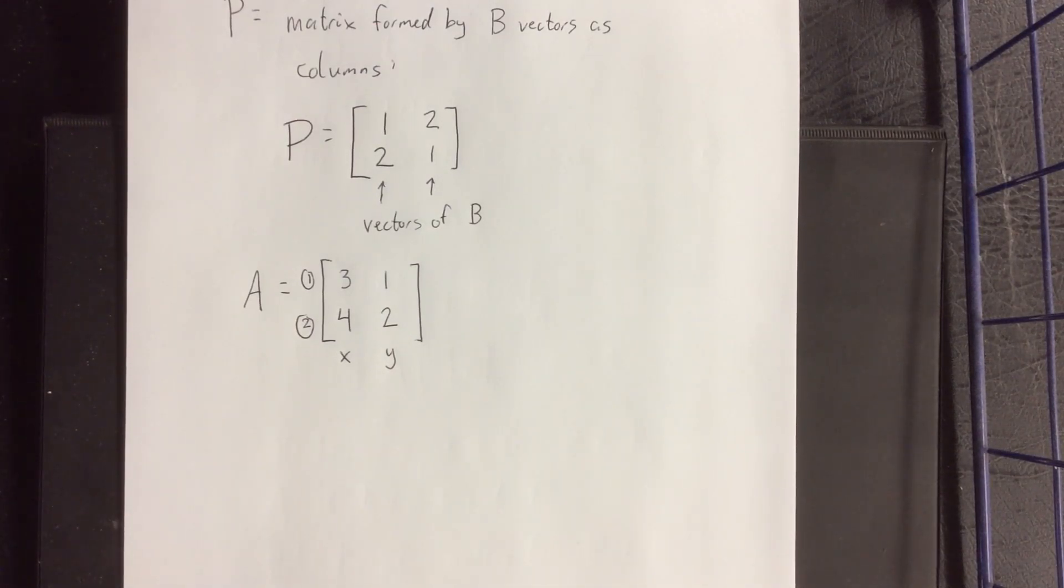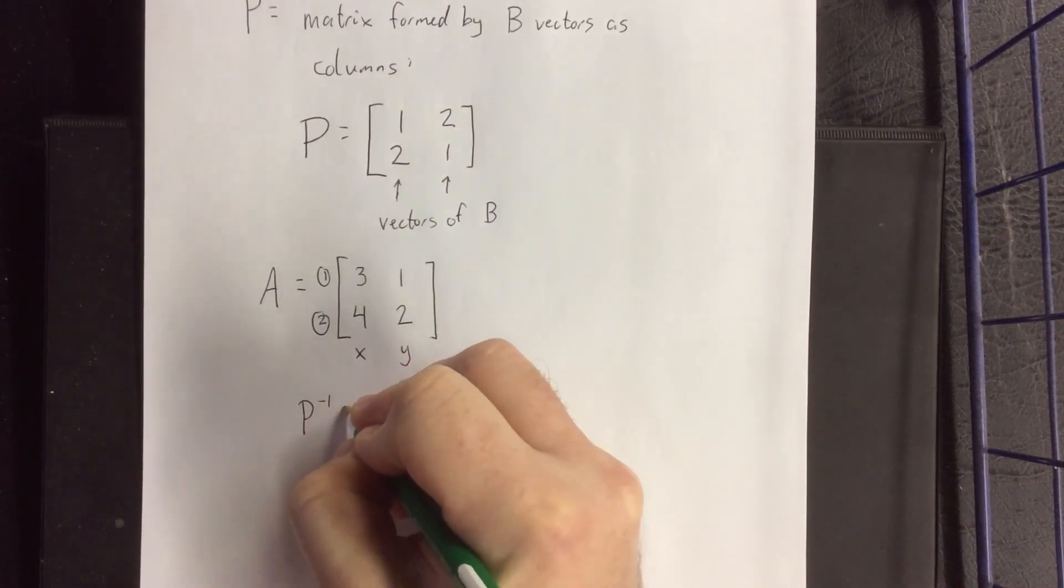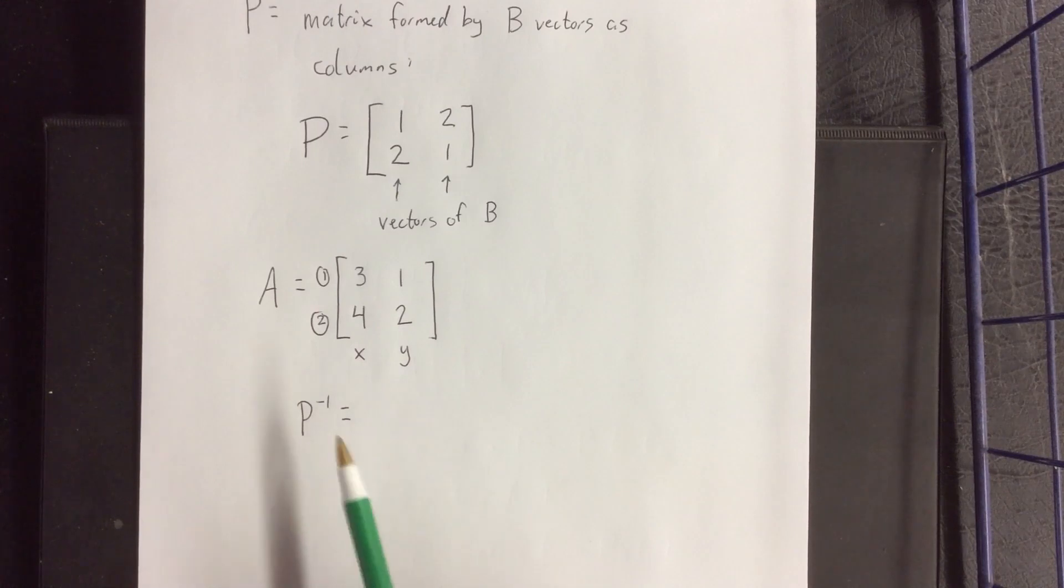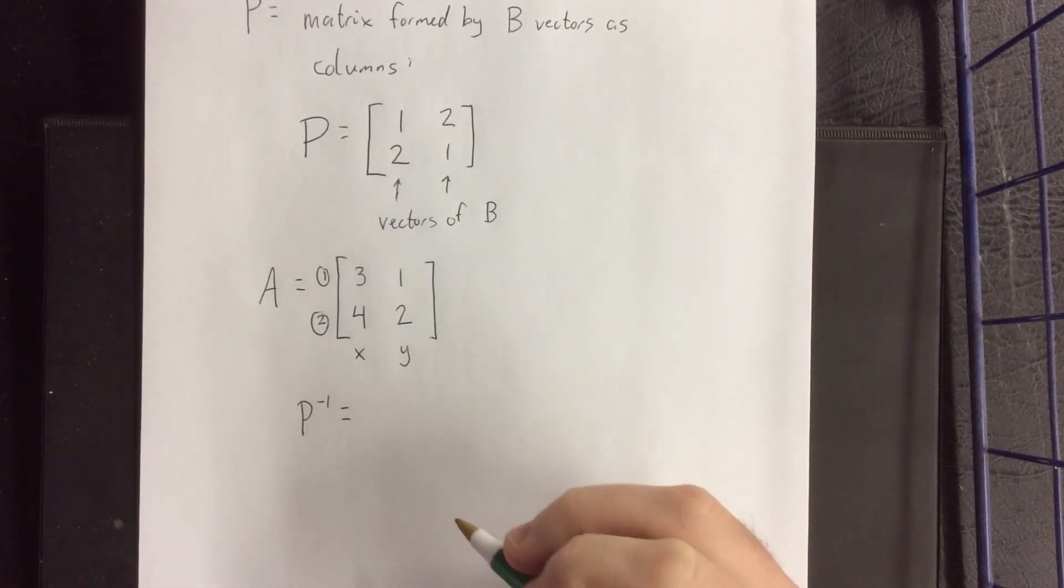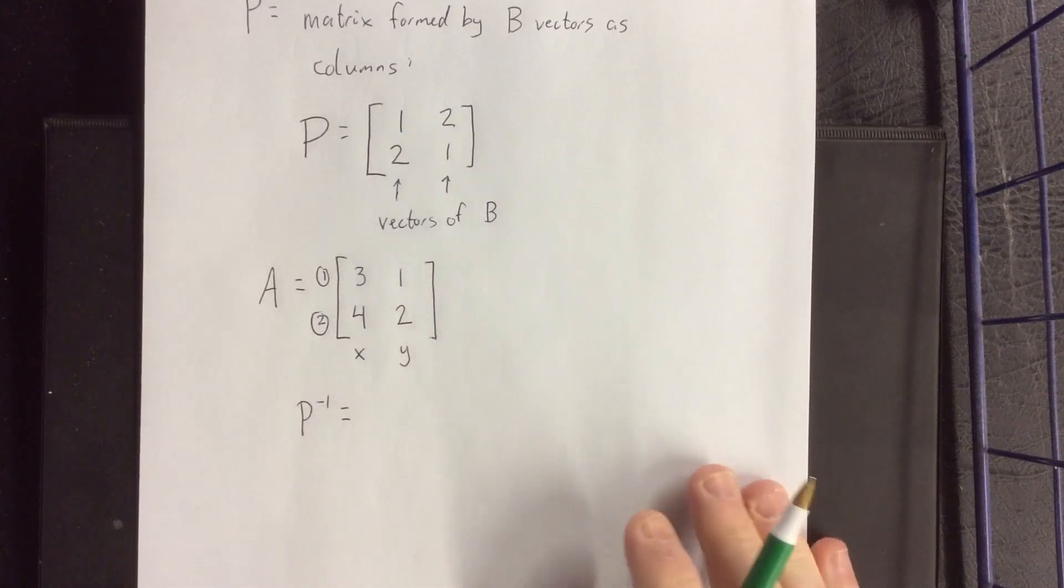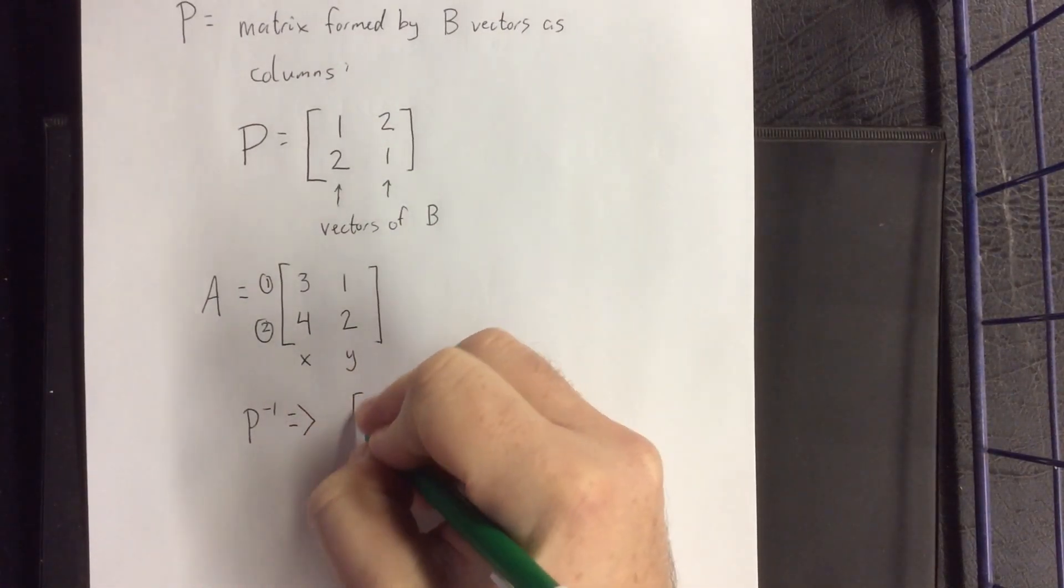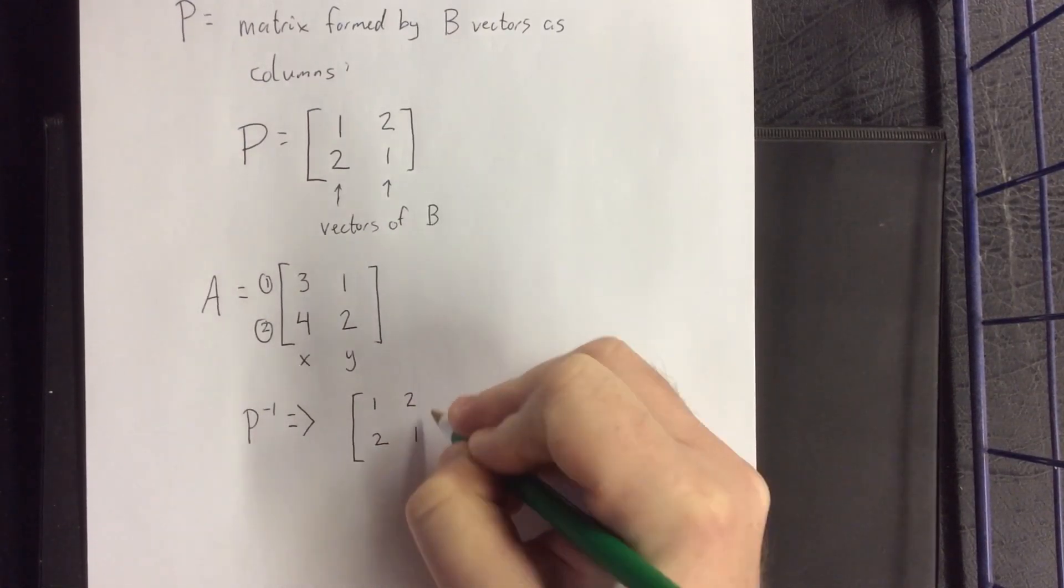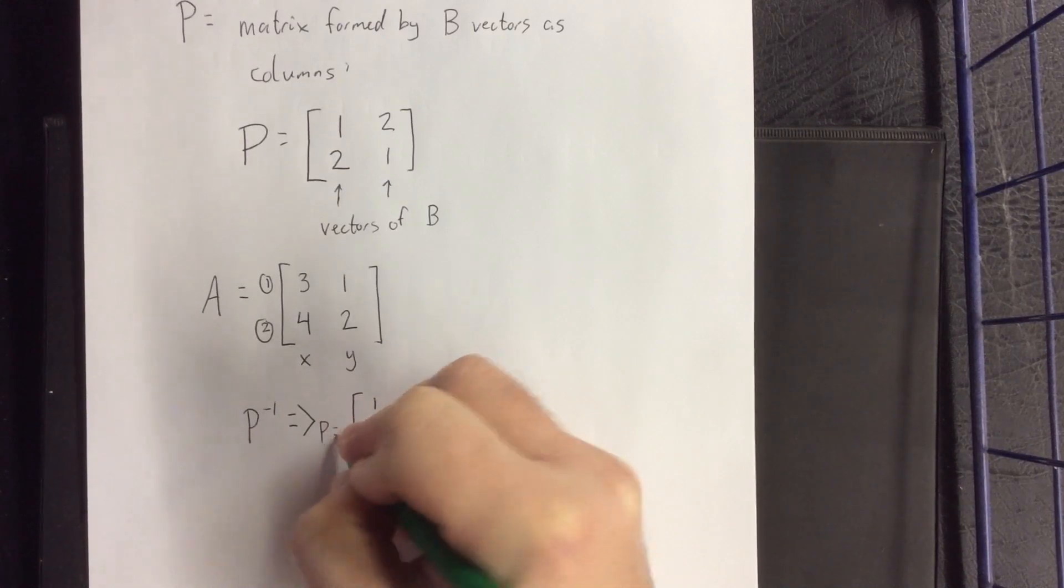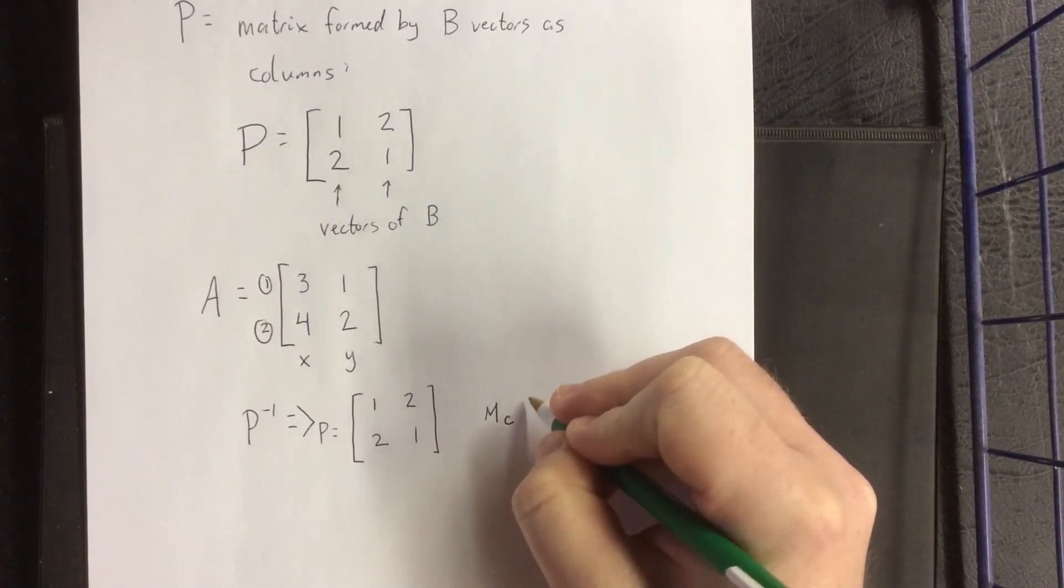Next up we are going to need the inverse of P. Now normally in order to get the inverse of P, I would simply grab my calculator, type P into the calculator, and ask for the inverse of that. Unfortunately I've left my calculator on campus and I am at home and it's Thanksgiving break. So we're going to do this the old-fashioned way. So here's our matrix P. First thing I'm going to do is come up with the matrix of cofactors of P.